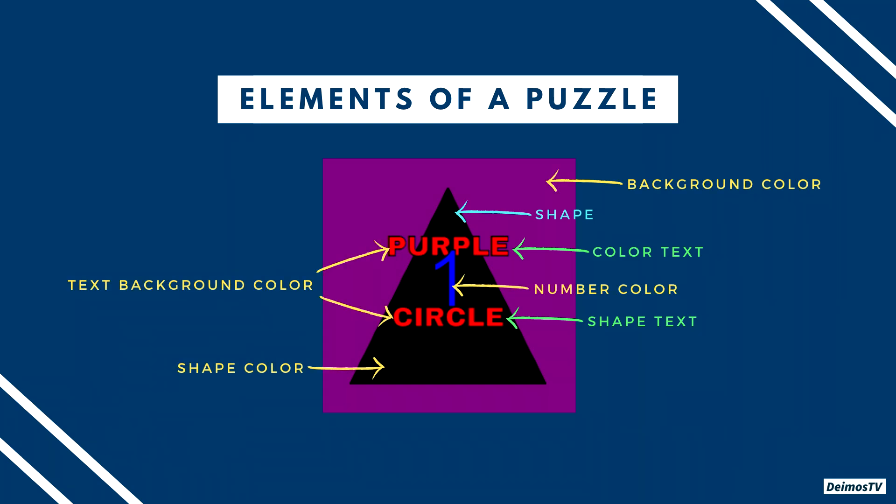The third set is the colors — I call them colors because they have colors in their names. Everything here is straightforward except for the text background color. You just have to identify what the colors are. So for the background color that's purple, number color that's blue, shape color that's black, and for the text background color that's red.